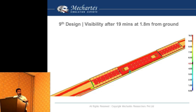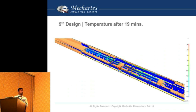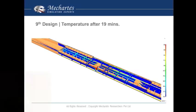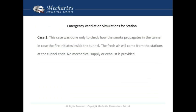After 19 minutes, when the fire is at peak, the visibility at 1.8 meters from the ground showed most of the area has visibility of more than 10 meters. Only in the corner area of the platform and near the fire was visibility less. The two fire exits had good visibility so people could run away. High temperatures were close to the ceiling, and in the occupied zone the temperature was not unfavorable.